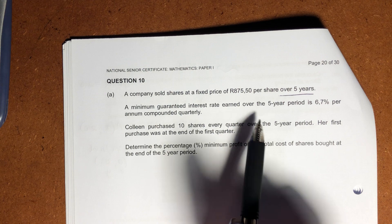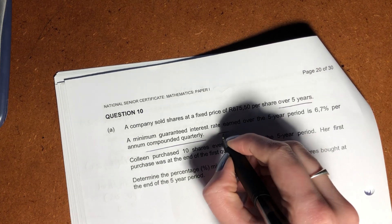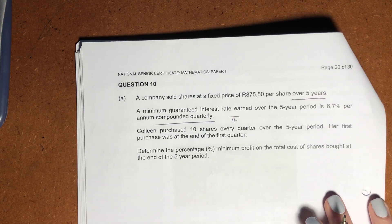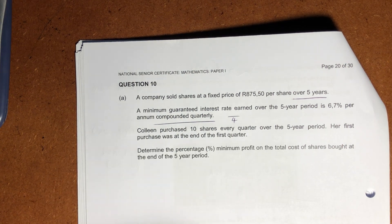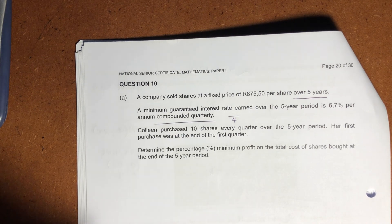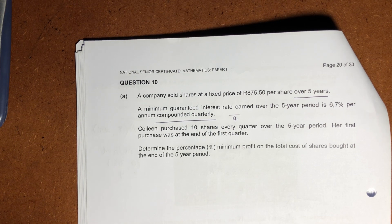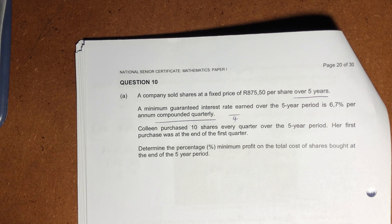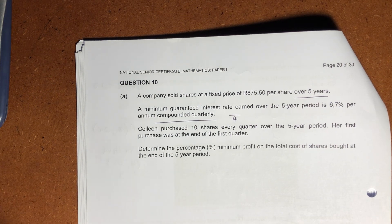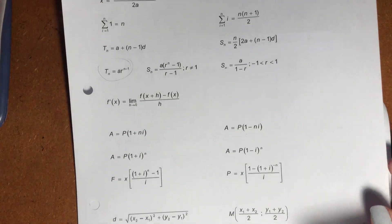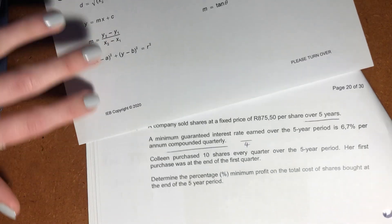Then it says a minimum guaranteed interest rate earned over the five-year period is 6.7% per annum compounded quarterly. So we know that our denominator is going to be divided by four because it's quarters. Colleen purchased 10 shares every quarter over the five-year period. Her first purchase was at the end of the first quarter, so we know that it's in arrears and not advance. So we don't have to mix anything up. So then it says determine the percentage minimum profits on the total cost of the shares bought at the end of the five-year period. So when it says at the end of a period, you should be thinking, oh, future value.